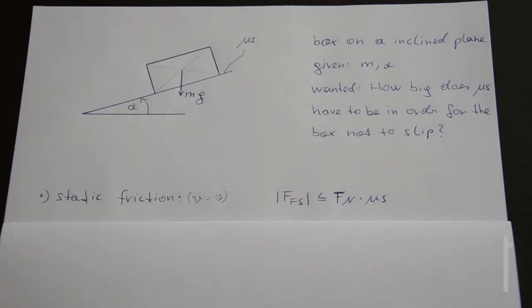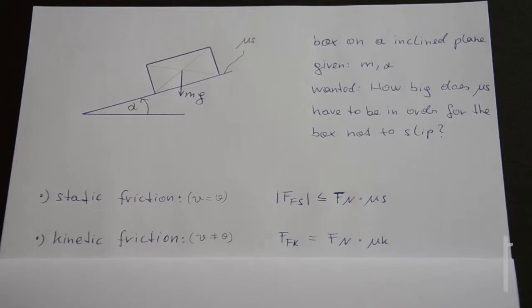For kinetic friction, the box moves and has a velocity. The very big difference between static and kinetic friction is that the direction of the force F friction kinetic matters and cannot be chosen freely. The force Ffk tries to prevent the box from moving and therefore has to show in the opposite direction as the velocity. This is a very important fact.